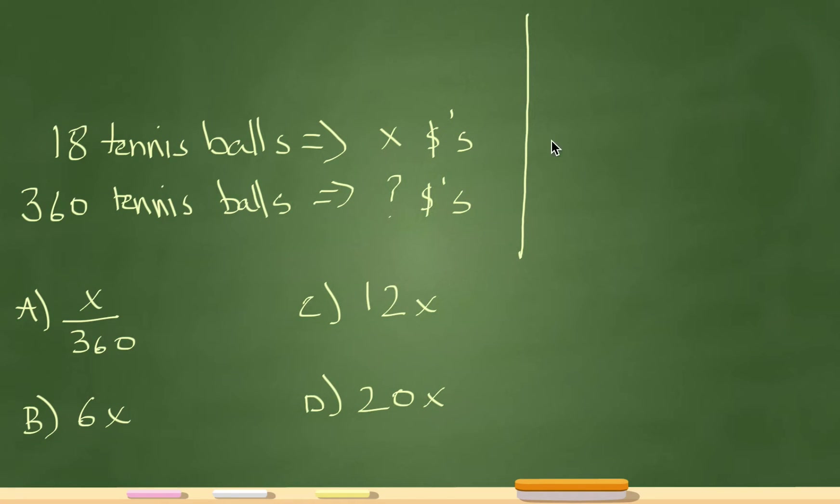So my variable here is X, and X represents the cost of 18 tennis balls. So what I'm going to do is I'm going to assign a number for X. I'm going to make X equal to 18. Now that tells me that 18 tennis balls cost $18.